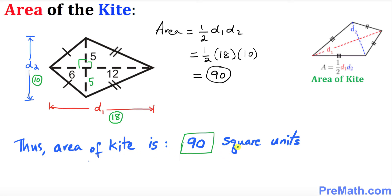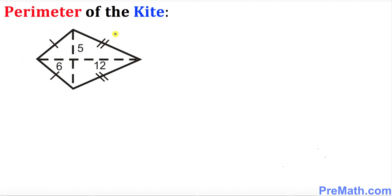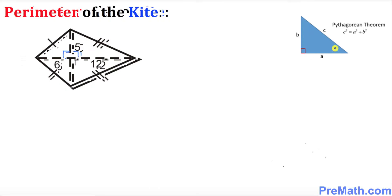Now we are going to find the perimeter of this kite. Before we find the perimeter, we must calculate the length of the smaller side and the longer side. As you know, these two triangles are right triangles, so we will be using the Pythagorean theorem: c squared equals a squared plus b squared, where c is the longest side, also called the hypotenuse.